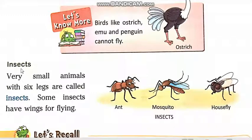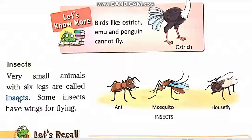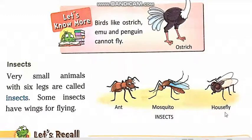Insects - insects means kiire makore. Very small animals with six legs are called insects. Bohut chhote animals, jinki six, chay tangay hoti hain, unhain insects kehetay hain. You can see in this picture, here are some insects: ant, mosquito and house fly.